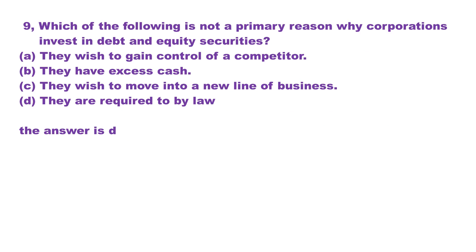Question 9. Which of the following is not a primary reason why corporations invest in debt and equity securities? A. They wish to gain control of a competitor. B. They have excess cash. C. They wish to move into a new line of business. D. They are required to by law. The answer is choice D.